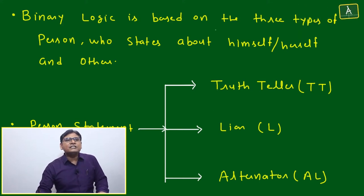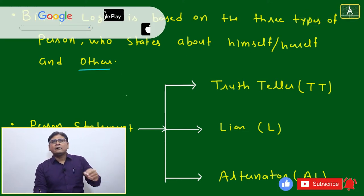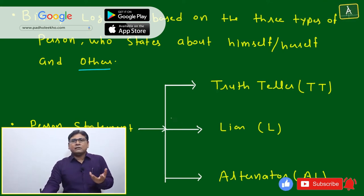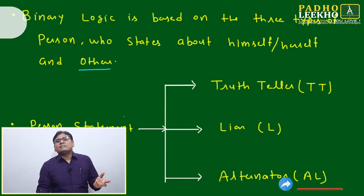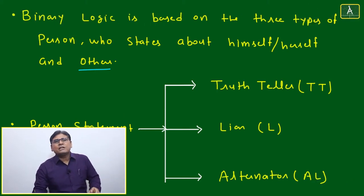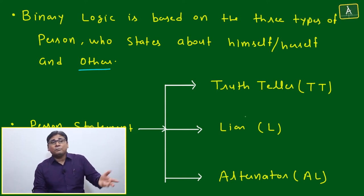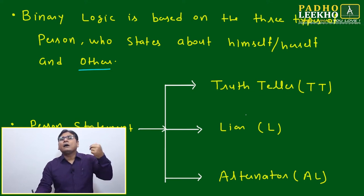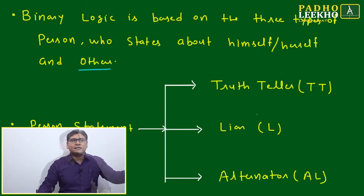Binary logic is based on three types of persons who make statements about himself, herself, or others. Any person will tell something about himself or about others. There are only two types of things we can state: what I am, and what others are.